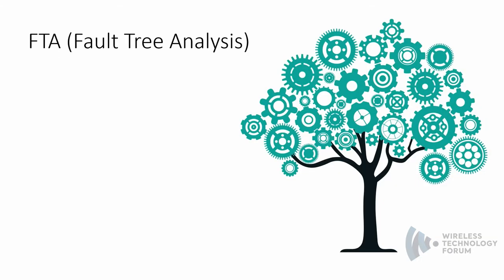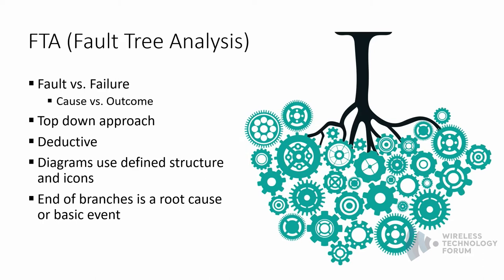The next tool is Fault Tree Analysis, FTA — it looks more like a top-down tree. The first thing to understand is the difference between fault and failure. Generally, a fault is the cause of an outcome — the failure. Something was at fault. We say it on the playground: 'it's his fault.' Fault is the cause; failure is the outcome. Something had a fault which resulted in a failure.